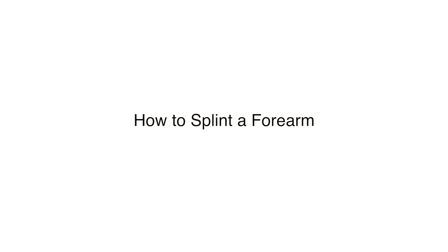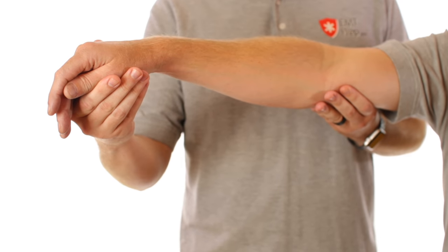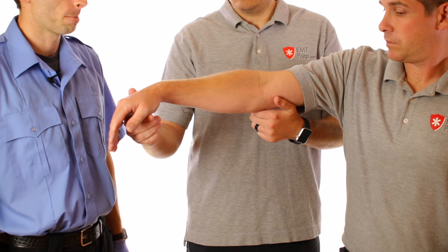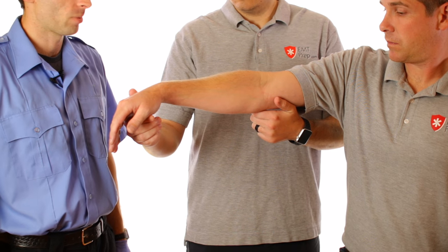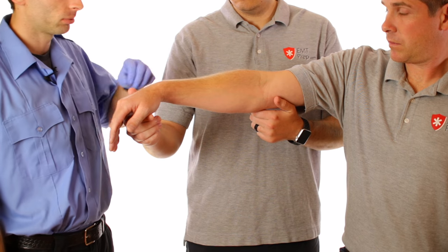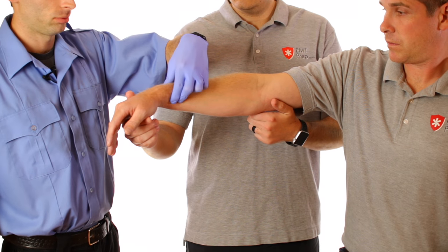Have your partner support the extremity above and below the injured site. In this video, we are simulating a mid forearm fracture. Ensure that you have circulation, motor ability, and sensation in the injured extremity.